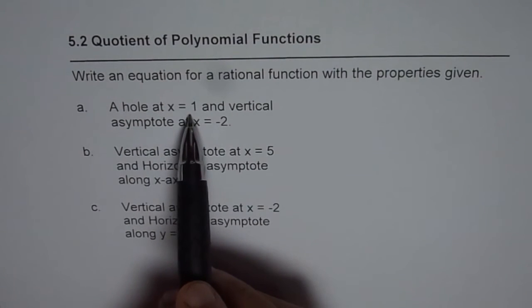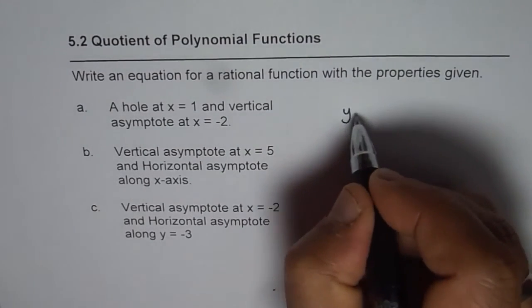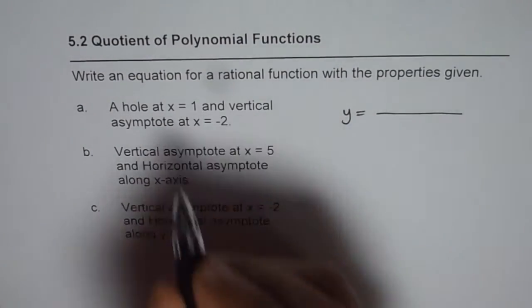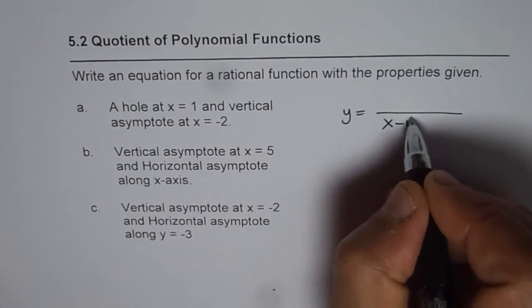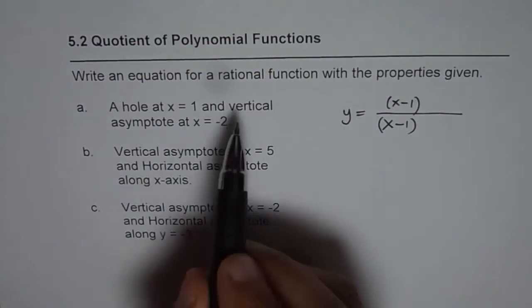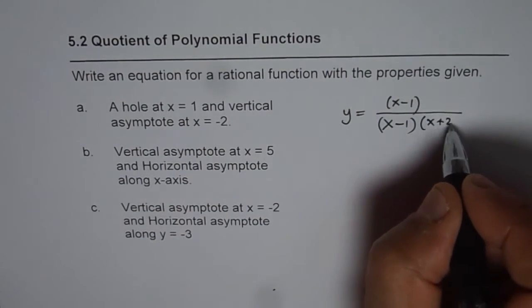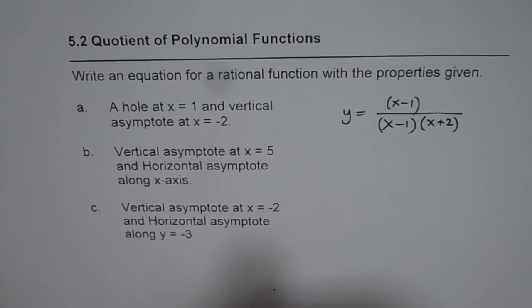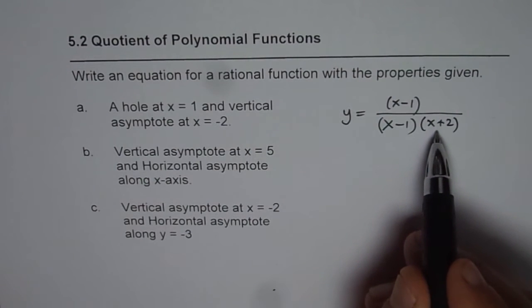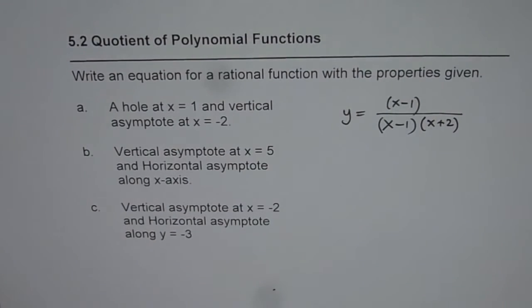Hole at x equals 1 and vertical asymptote at x equals minus 2. So, we have a hole at x equals 1. That means x minus 1 is the factor which is common in both numerator and denominator. Vertical asymptote at x equals minus 2. That means x plus 2, that will be 0 at x equals minus 2, should be a factor in denominator only to give you vertical asymptote. So, that is the solution.